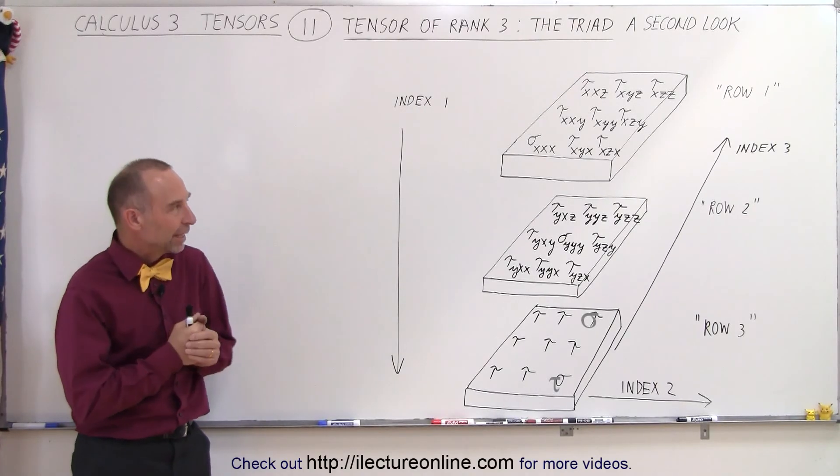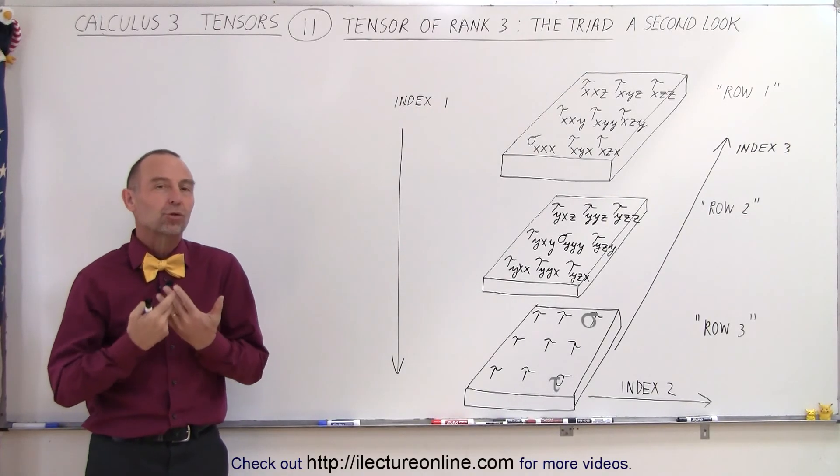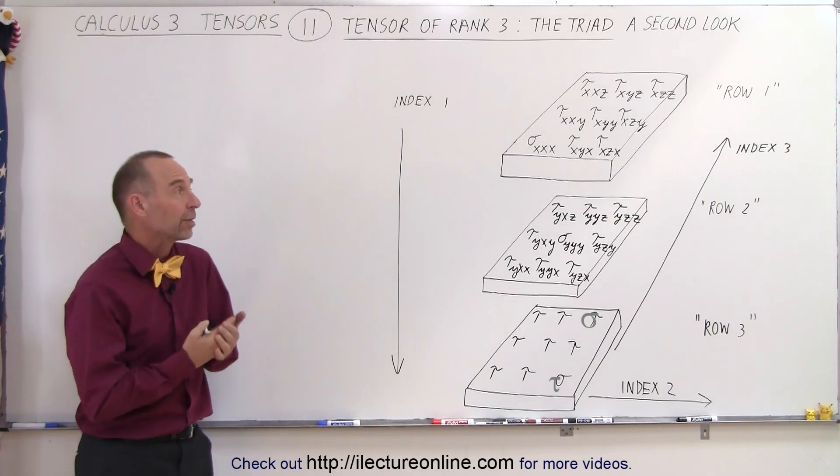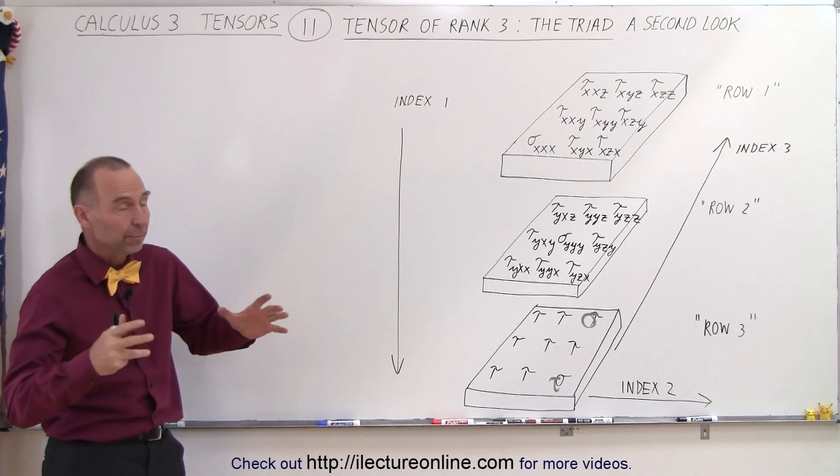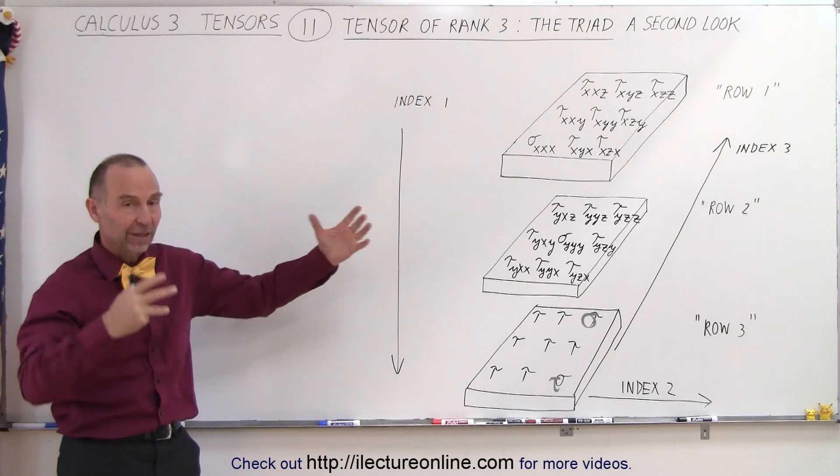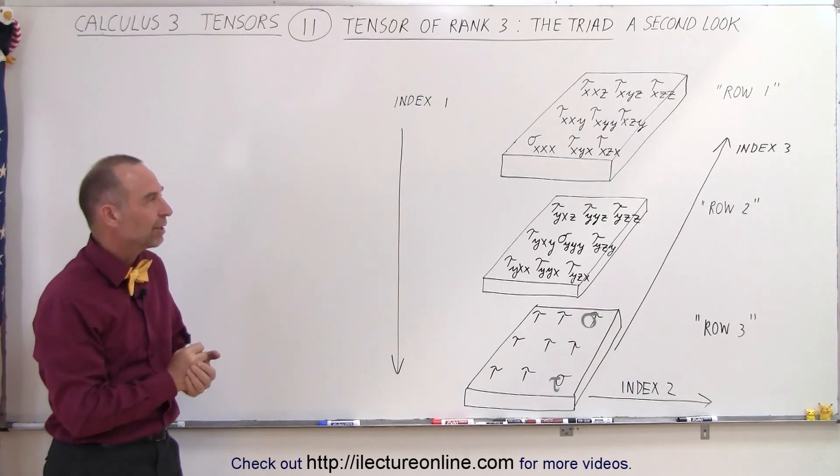Welcome to ElectronLine. Here's another way in which we can look at a triad, which is a tensor of rank 3, which has 27 components, so it's basically represented by a block like we saw in the previous video.